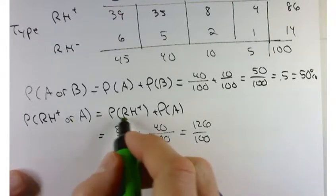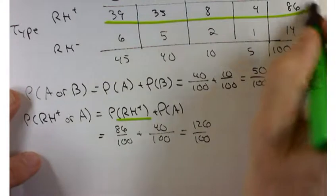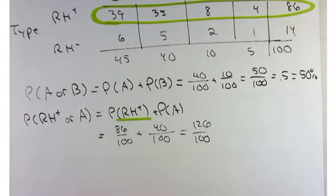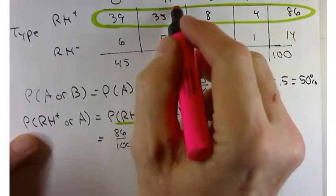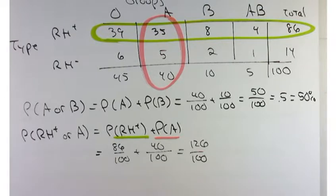So the probability that somebody is Rh positive, that came from this row. And the probability that someone had blood type A came from this column. So that there was a double counting of part of this group, right?